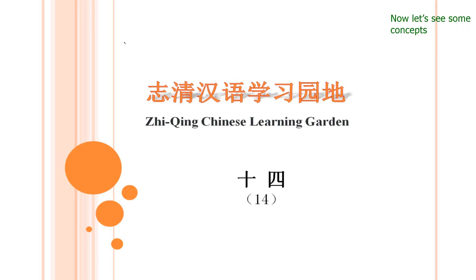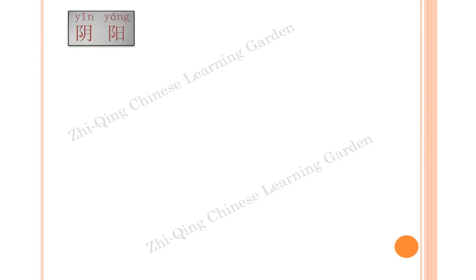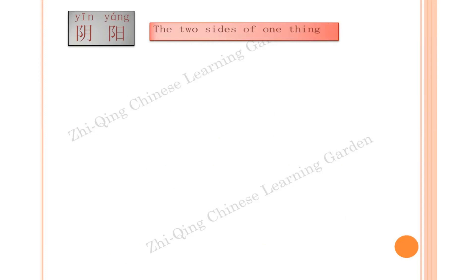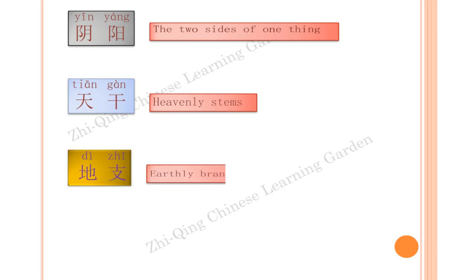Now let's see some concepts. Yin yang — the two sides of one thing. Tian Gan — heavenly stems. Di Zhi — earthly branches.